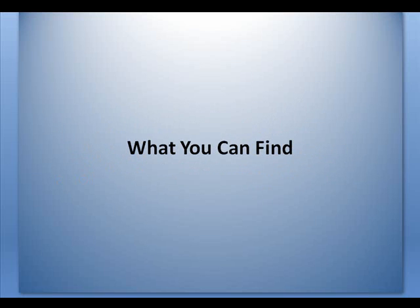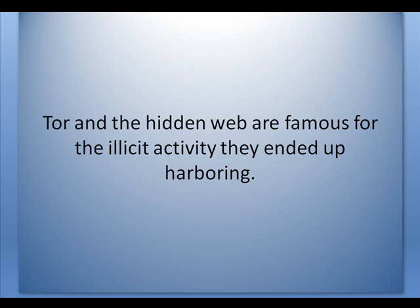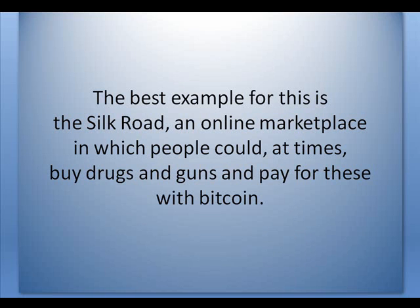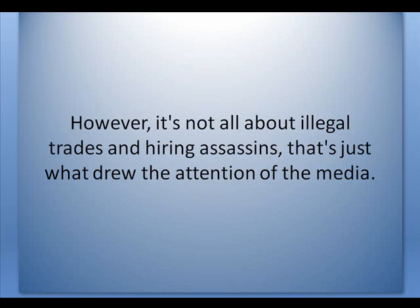Tor and the Hidden Web are famous for the illicit activity they ended up harboring. Because navigation is so different from the exposed Internet, and because Tor itself facilitates privacy, it didn't take long until shady characters started using it for their own purposes. The best example is the Silk Road, an online marketplace in which people could buy drugs and guns, and pay for these with Bitcoin. However, it's not all about illegal trades and hiring assassins — that's just what drew the attention of the media.